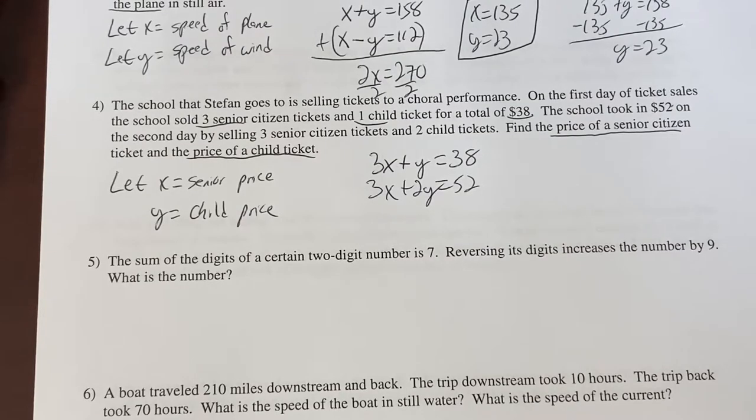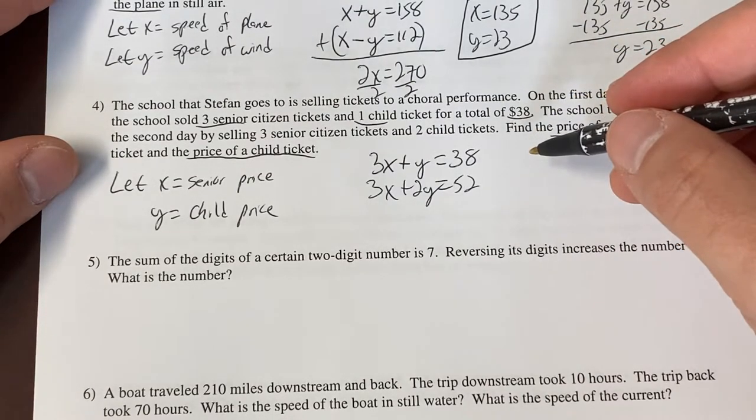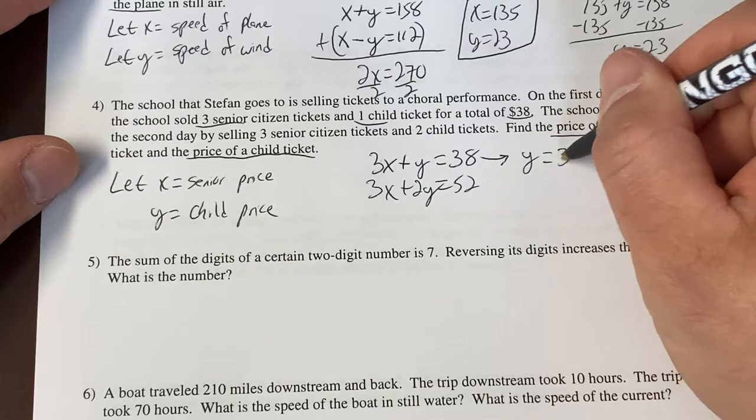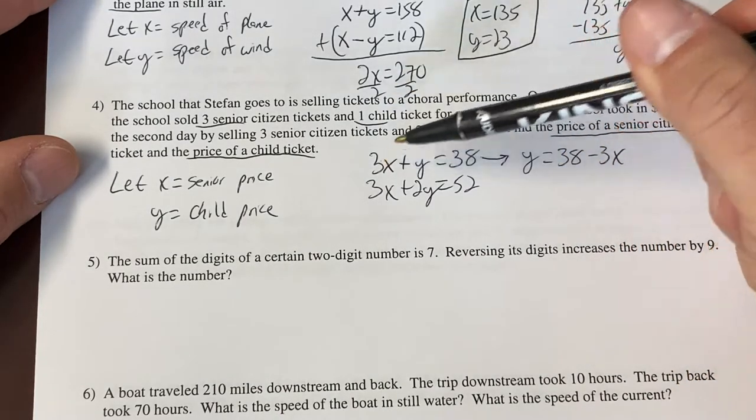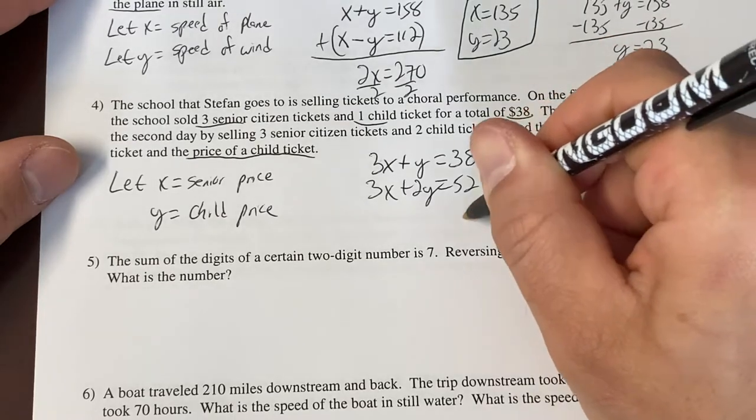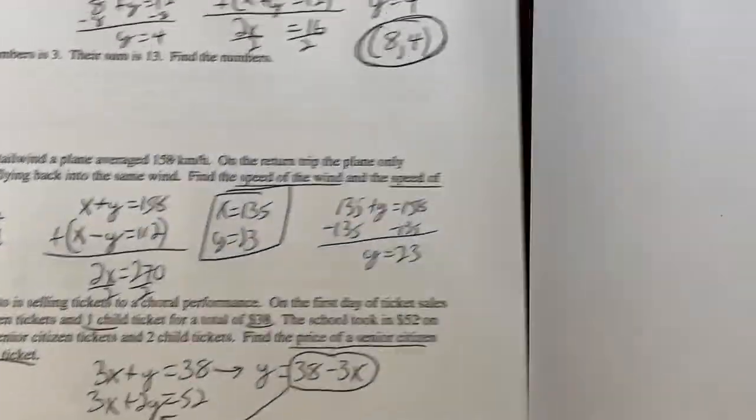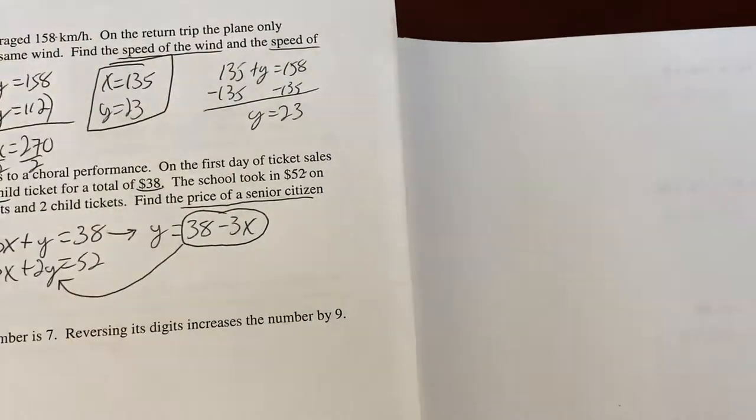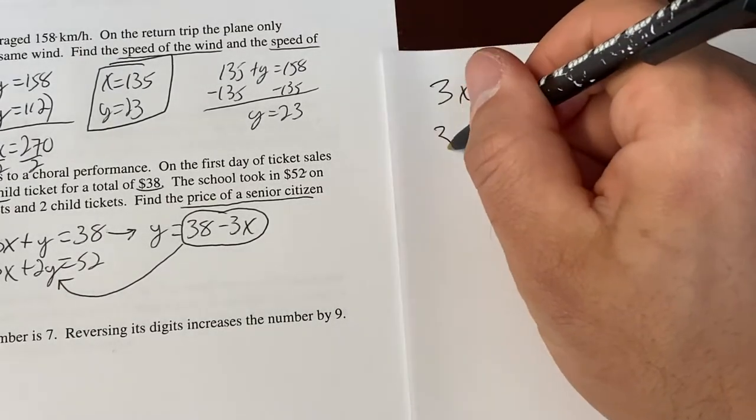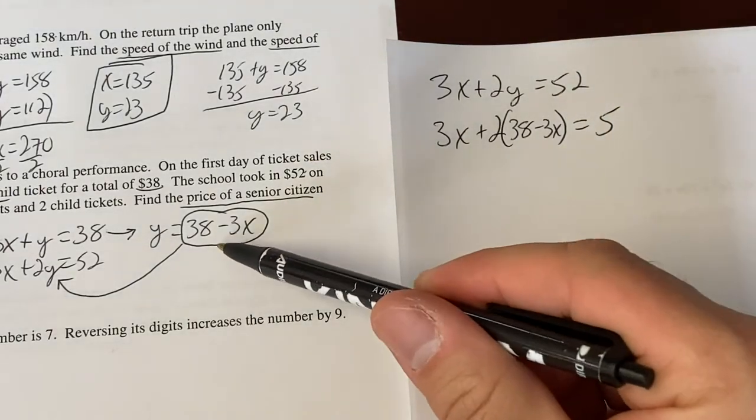Now we could solve this with elimination again, but I've already done elimination twice. So maybe I'll substitute. And I don't know if I'm going to have enough room to squeeze this all in here. I might have to go to a separate sheet of paper, but let's see. I'm going to take this equation right here and I'm going to subtract 3x from both sides. And I'm going to have that Y equals 38 minus 3x. Did you see what happened there? Minus 3x on the left, minus 3x on the right. And you get Y equals 38 minus 3x. If I know what Y equals, well, I can plug it in right there for Y. And let's go to a separate sheet of paper and do this. So I just so happen to have a sheet of paper ready right here. So we'll just kind of slide this over here like this so we can kind of see both as I transfer it over.